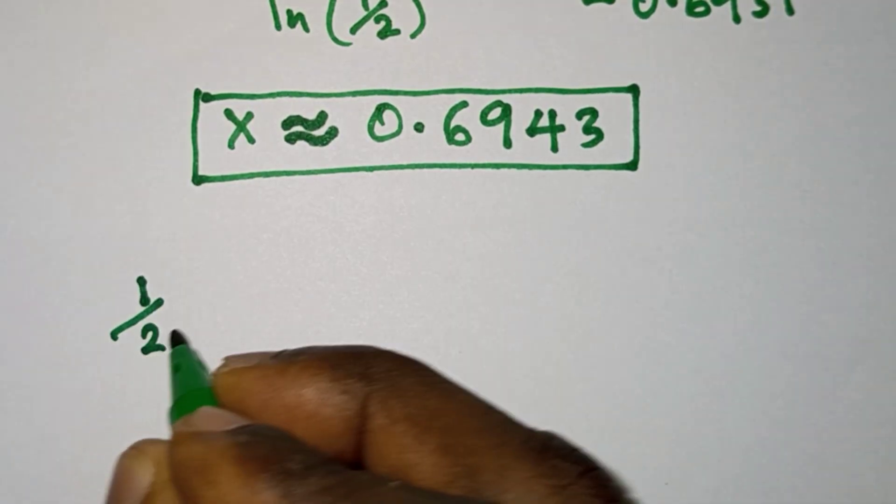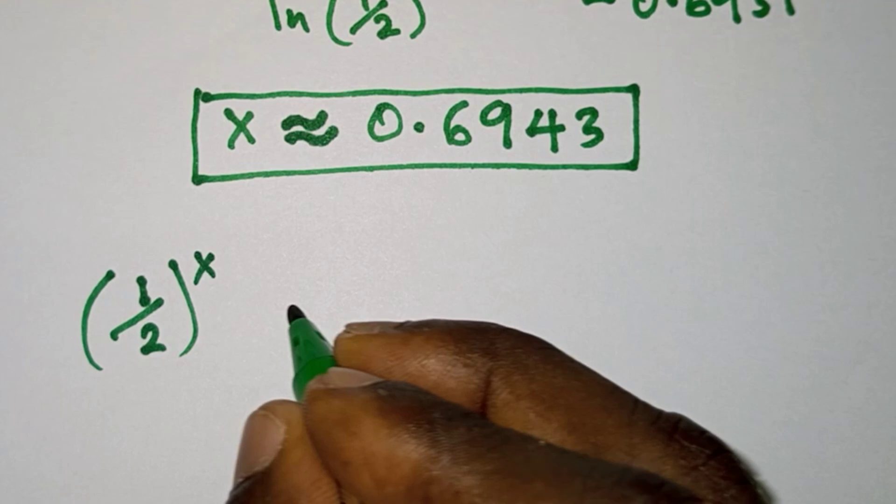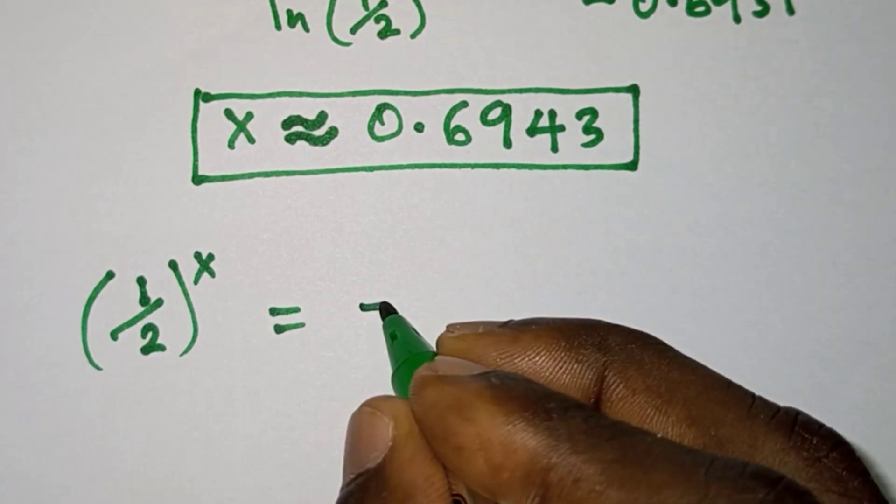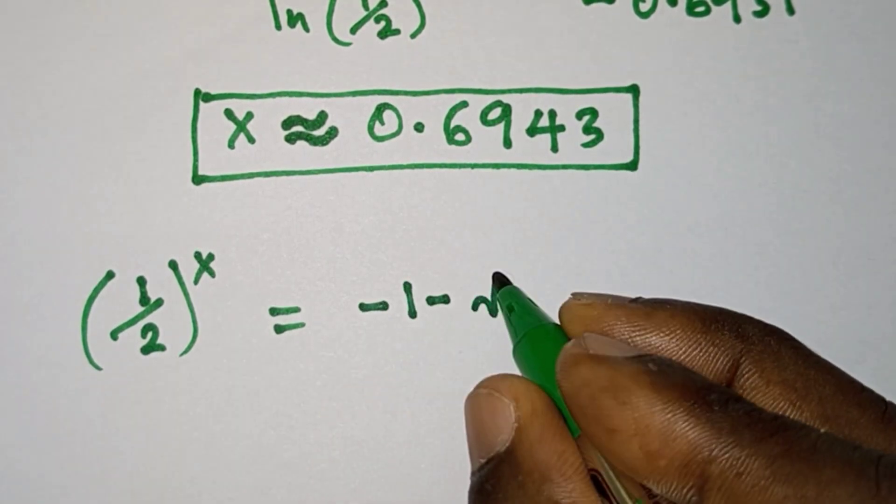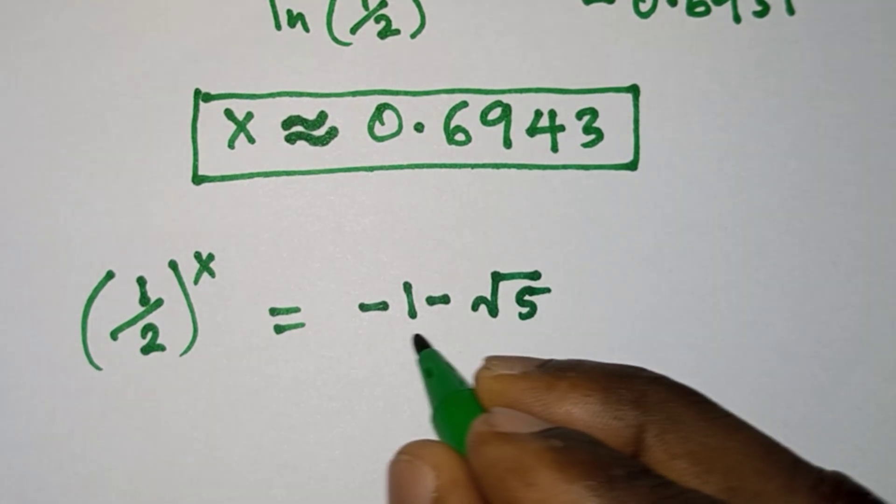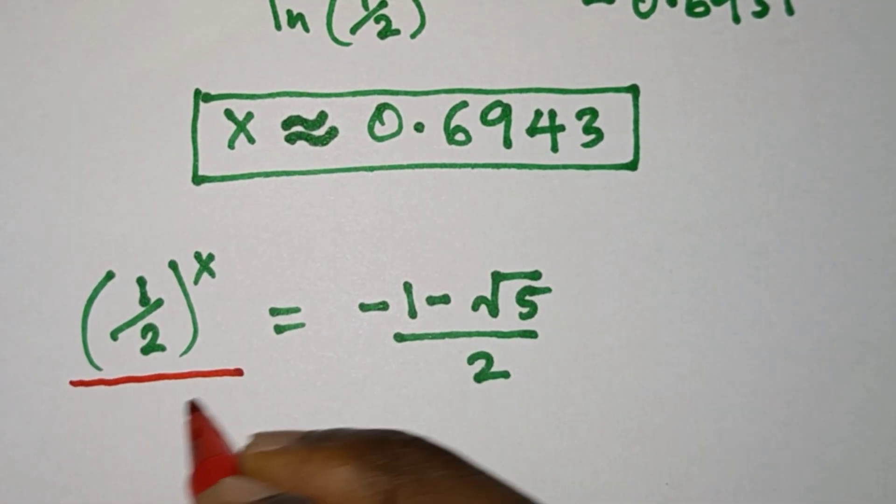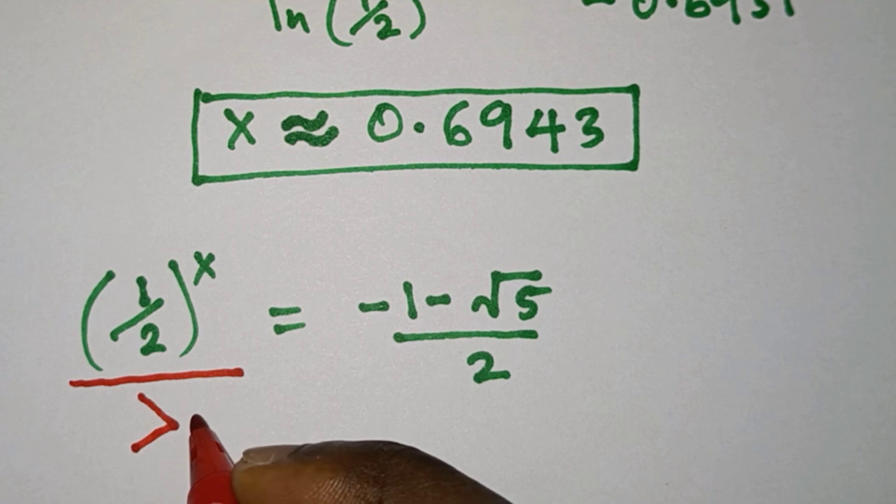Now we also consider the negative value. We have (1/2)^x = (-1 - √5)/2.